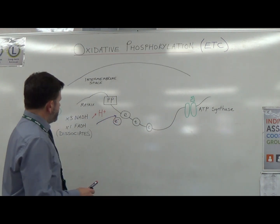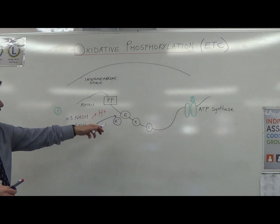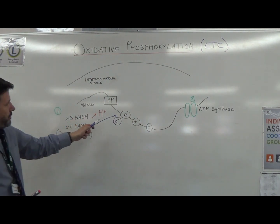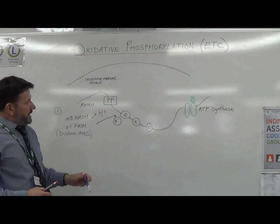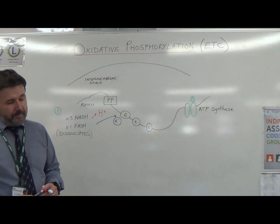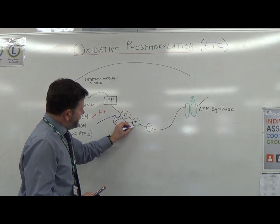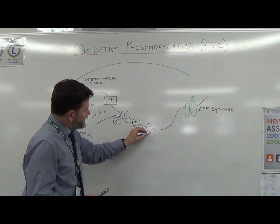NAD and FAD dissociates hydrogen and electrons. Now I'm going to talk about the ETC. The electrons are going to be passed down these carriers. Now for AQA you do not need to know what these carriers are, but they are carrier proteins embedded in the matrix membrane.